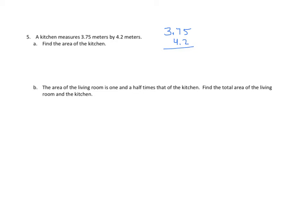Let's begin. 2 times 5 is 10. Regroup my 1. 2 times 7 is 14, plus 1 is 15. Regroup my 1. 2 times 3 is 6, plus 1 is 7. We will insert our 0 because we are multiplying from the tens place. And 4 times 5 is 20. Regroup the 2. 4 times 7 is 28, plus 2 is 30. Regroup the 3. And 4 times 3 is 12, plus 3 is 15. We will find the sum of our partial products and we have 15,750.